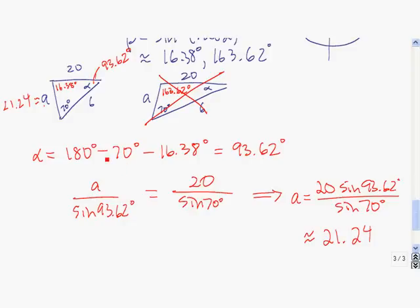So that solves our triangle. The missing values are the angle of 93.62 degrees here, 16.38 degrees here, and this side of about 21.24.